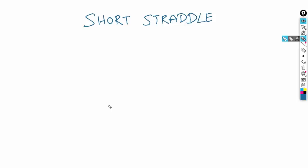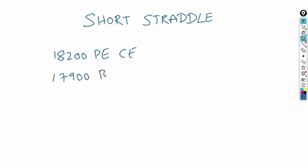This is a strategy we've been using for almost three to four years, which lets me give a very different perspective on it. Whenever you say short straddle, it generally involves shorting a call option and put option of the same strike — for example, shorting the 18,200 put and call together, or the 17,900 put and call together, creating an 18,200 or 17,900 short straddle.